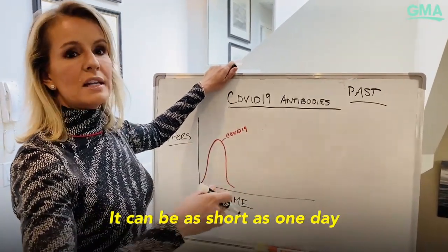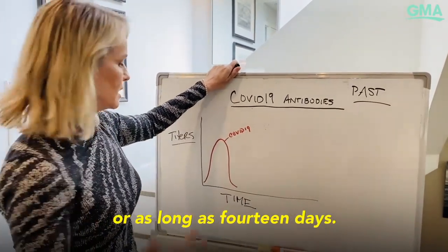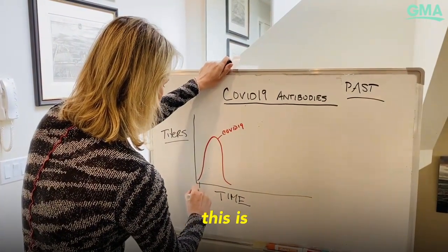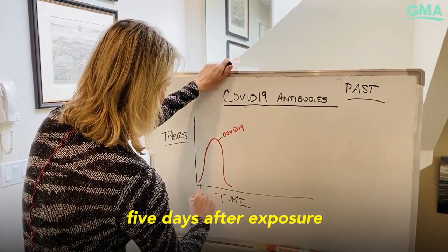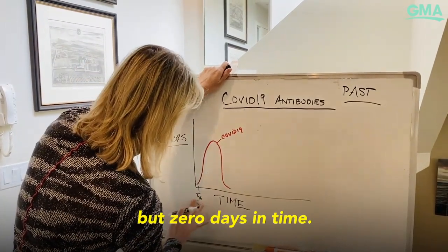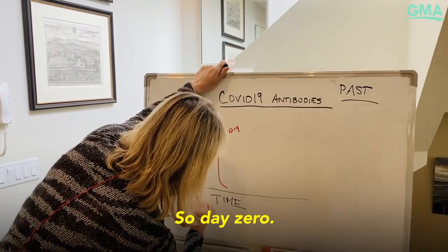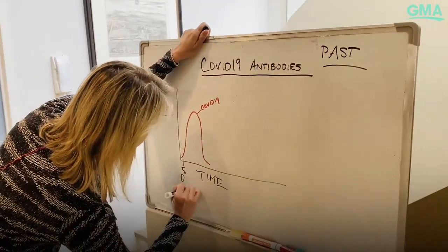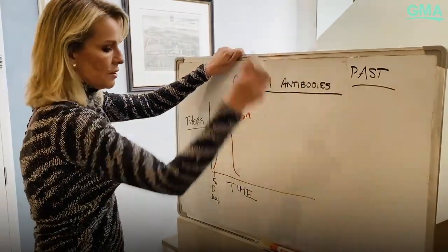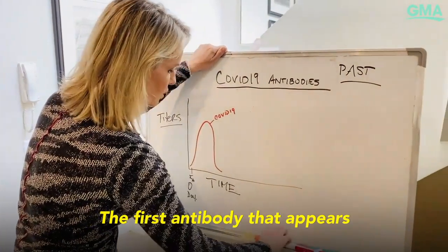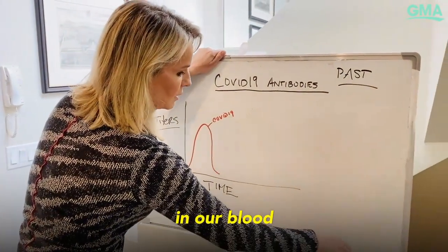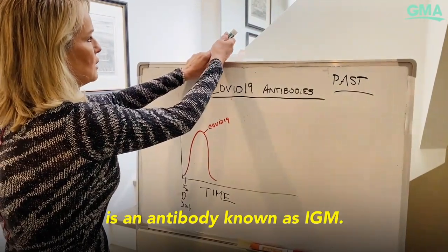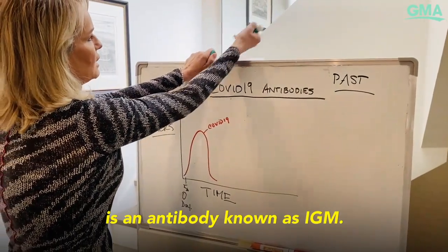It can be as short as one day or as long as 14 days. So let's say this is five days after exposure, but zero days in time — day zero. The first antibody that appears in our blood, and I'm going to use green, is an antibody known as IgM.